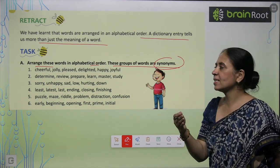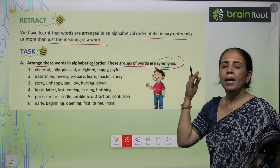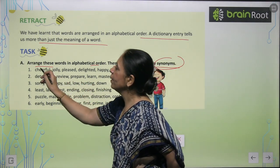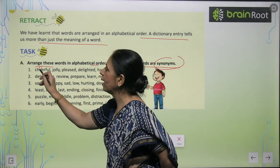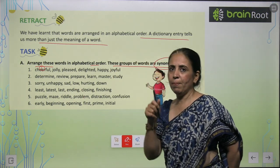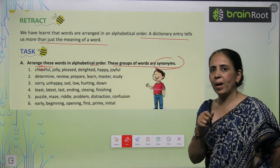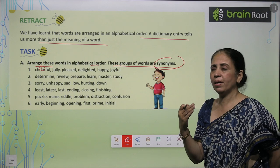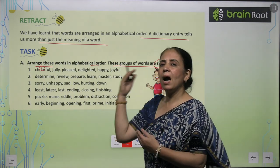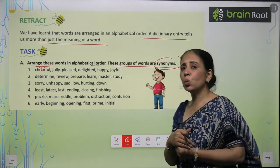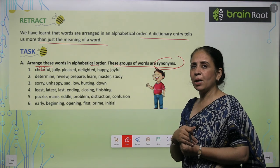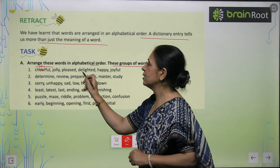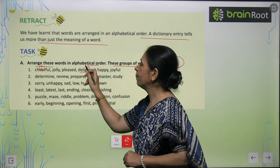So let's start with alphabet A, B, C. So we have C here. That means cheerful will come at number 1. Right? We will arrange it in alphabetical order. After that, what do you see here — a word that starts with D? Very nice. That is delighted. So it will come at second number.